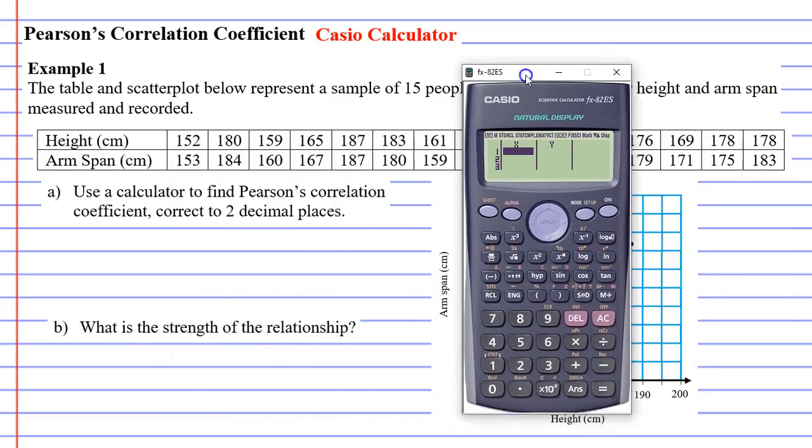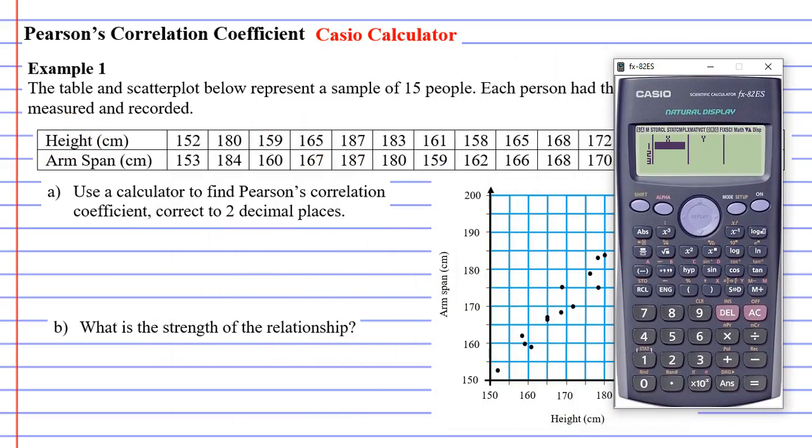Let's do that now. So looking at our heights, we've got 152, 180, 159. 152 and then go equal, 180 equals, 159 equals. I'm going to pause and finish this off.